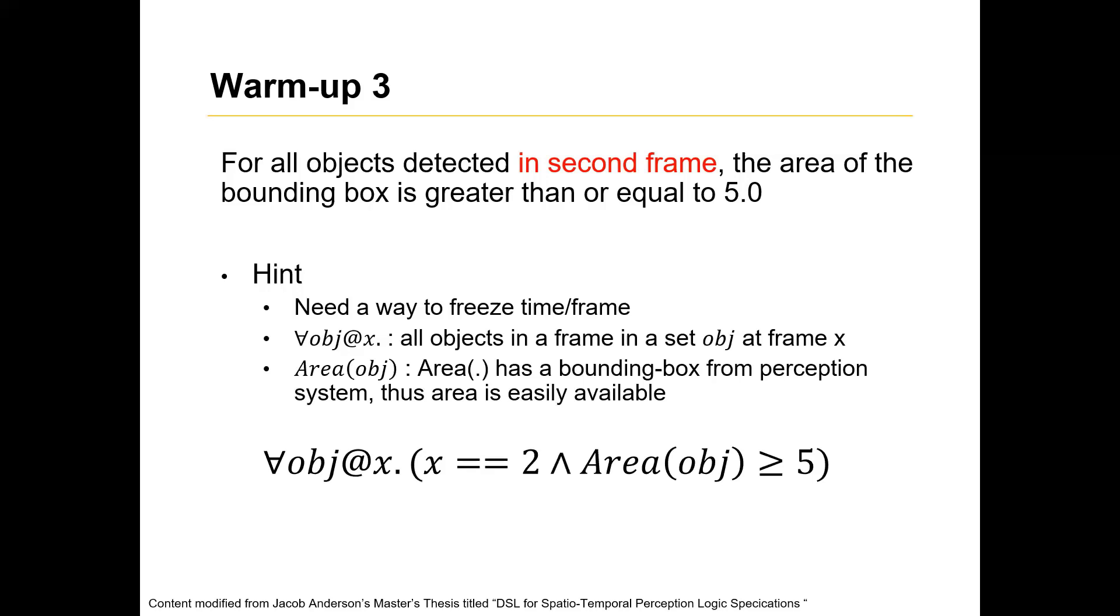We say that, for all objects, at a particular frame X, X equals to 2, because we are dealing with the second frame, and the area of the object, greater than 5. Do these make sense to everyone?